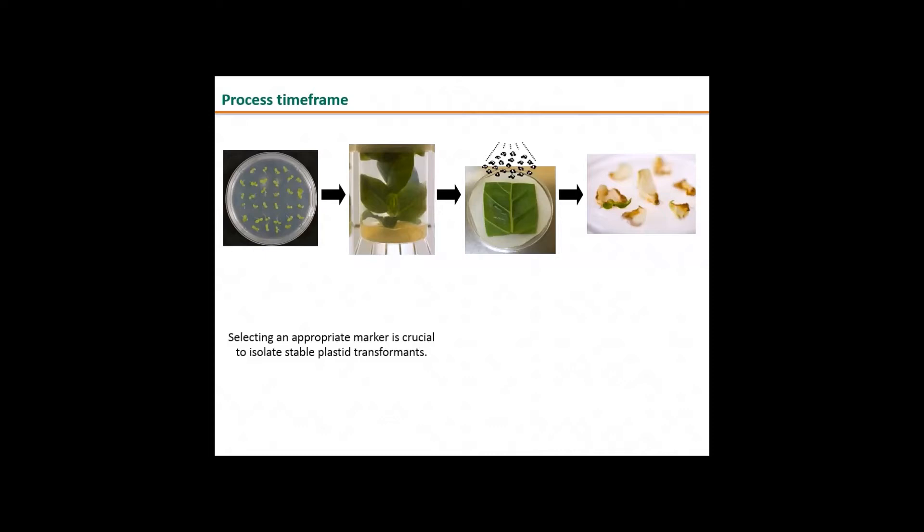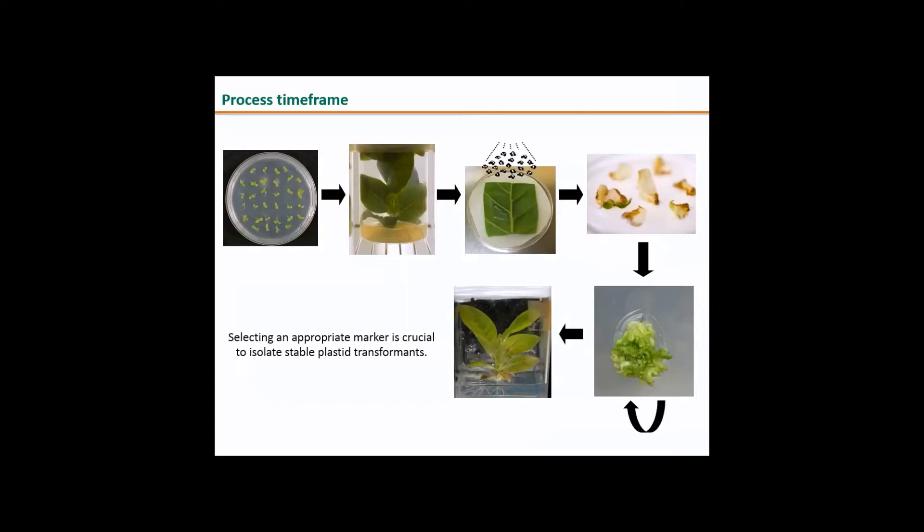You have to wait two days in the middle and then transfer to selection. After three to four weeks, usually peaks after five weeks, you start seeing those putative transformants. It's essential to select an appropriate marker for isolating stable plastid transformants. Then you transfer them to fresh media. It's really important that you keep that selection pressure going. That's a process you'll have to do a number of times. As I mentioned, you have many copies of the chloroplast genome, so you might have to do it a number of times until everything in the cell is actually transformed.